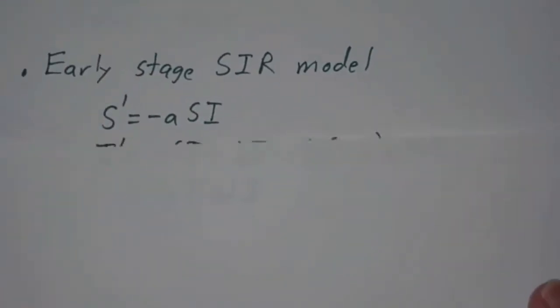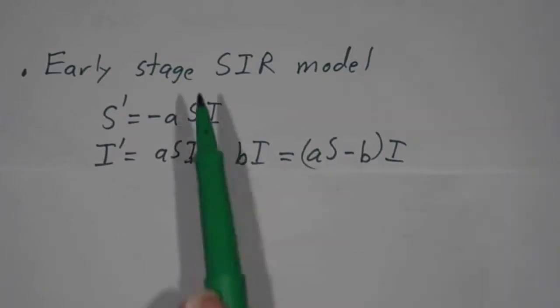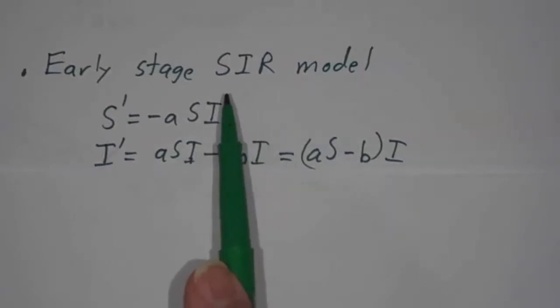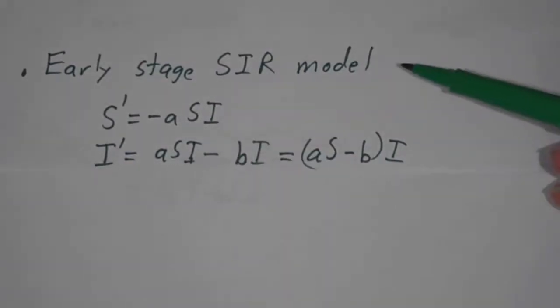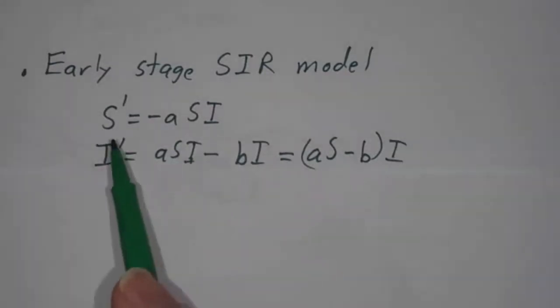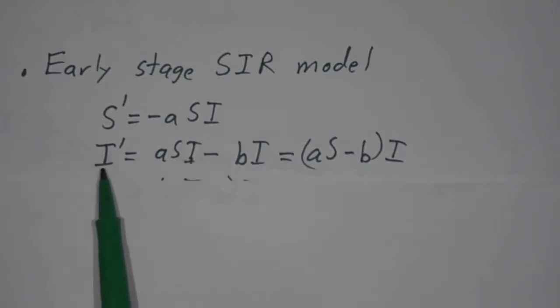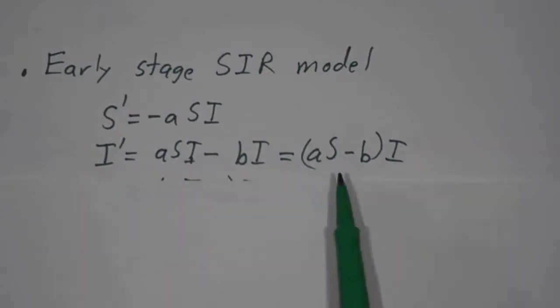And then you've got other viral things, like diseases. The SIR model can be either a model of disease spread or market penetration. Either way, the number of susceptibles goes as S' = -aSI, and the number of infected grows as I' = aSI - bI. That's aS - b times I.